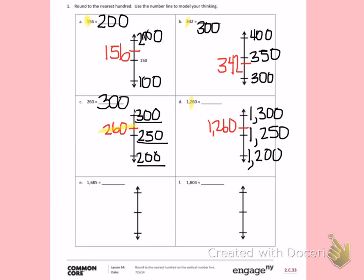Looking at my number line, 1,260 is past the halfway point, so I will round up to the next hundred. 1,300.